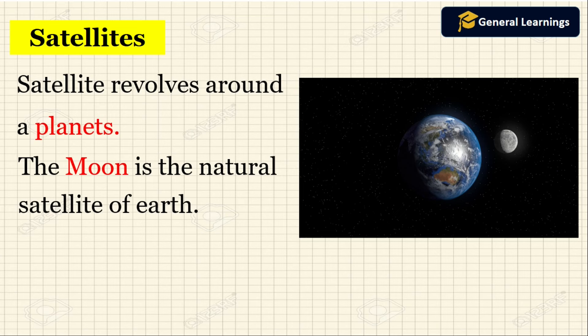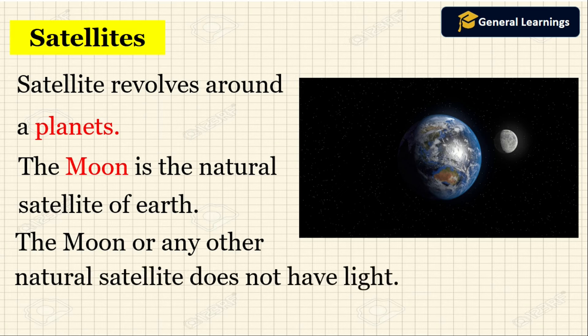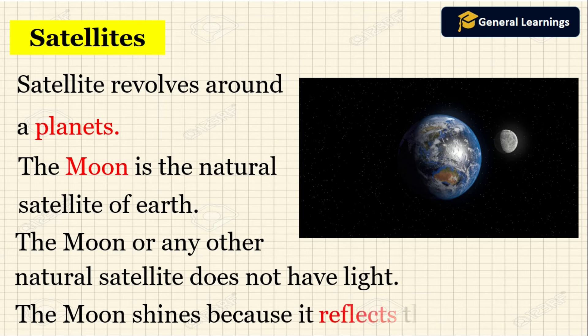The moon is the natural satellite of Earth. The moon or any other natural satellite does not have light. The moon shines because it reflects the light of the sun.